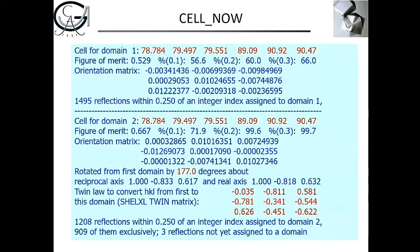CellNow easily finds the well-known cell constants of cubic insulin and with the first orientation matrix indexes approximately 60% of the reflections. It then rotates the cell — so the cell constants are identical but the orientation matrix is different — and from the not-yet-indexed reflections, nearly 100% are now indexed. The rotation is approximately 180 degrees about these reciprocal or real axes. The twin law looks very complicated with no integer values, but it's not necessary to look at it because everything is handled in the programs and the information is given in the data file.